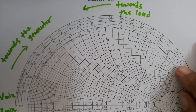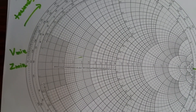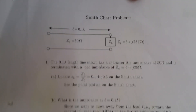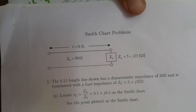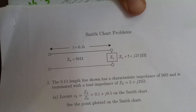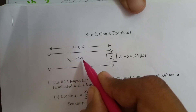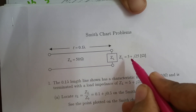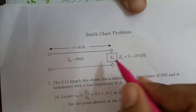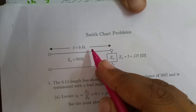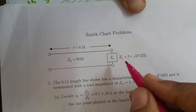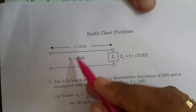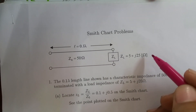To understand this, let us solve one basic problem. In this problem, we have characteristic impedance Z0 = 50 ohms, load impedance ZL = 5 + j25 ohms, and length of transmission line = 0.1 lambda. There are many parameters we can solve using the Smith chart.